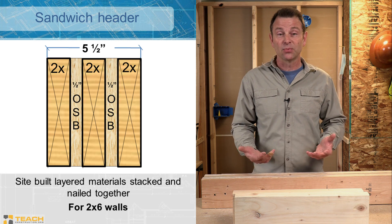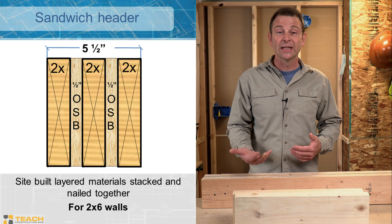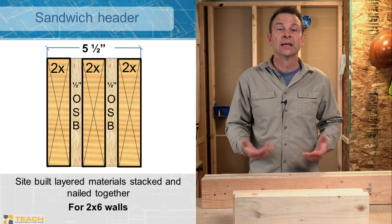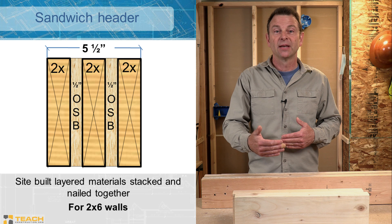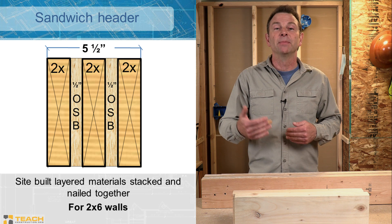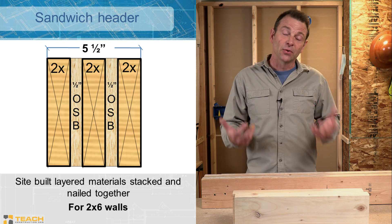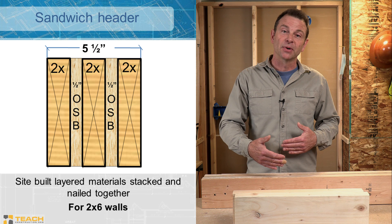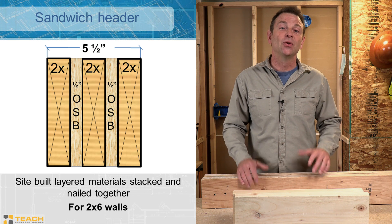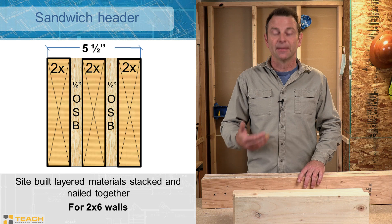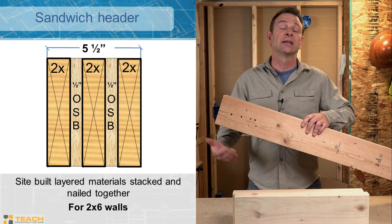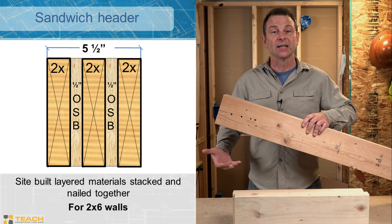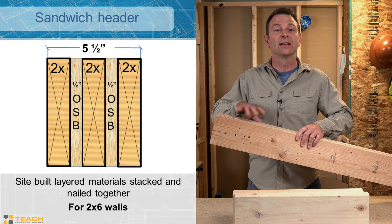For a 2x6 wall, a sandwich header would be made with three layers with half-inch OSB in between each one of those 2-bys. That gives you a total thickness of five and a half inches, which matches your 2x6 wall depth. You flush out the header on both sides — you have a strong situation. You could also change the dimensions by going to a shallower 2x4 or a deeper 2x8, 2x10, or 2x12, which would add strength to this header.